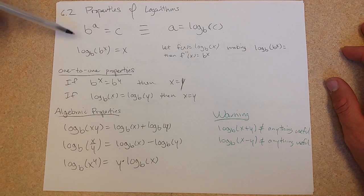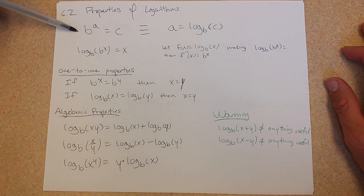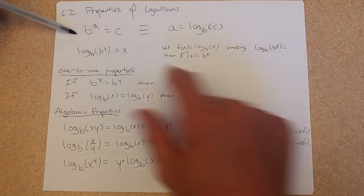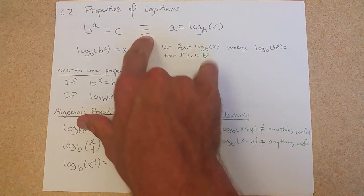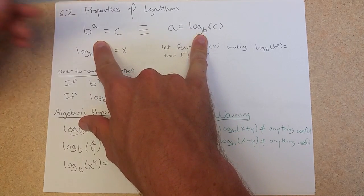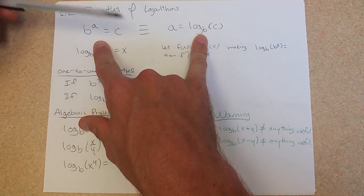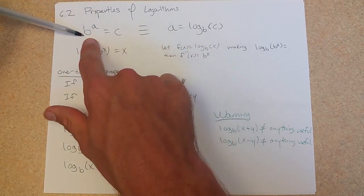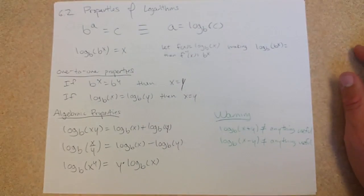6.2, properties of logarithms. I wrote this down before, but it's the first thing in 6.2, so I'm just rewriting it with the letters they're using. This triple equal sign just says that these two equations are the same thing. You can also write if and only if, or exactly when, and you're just moving the base to the other side when you make a log.